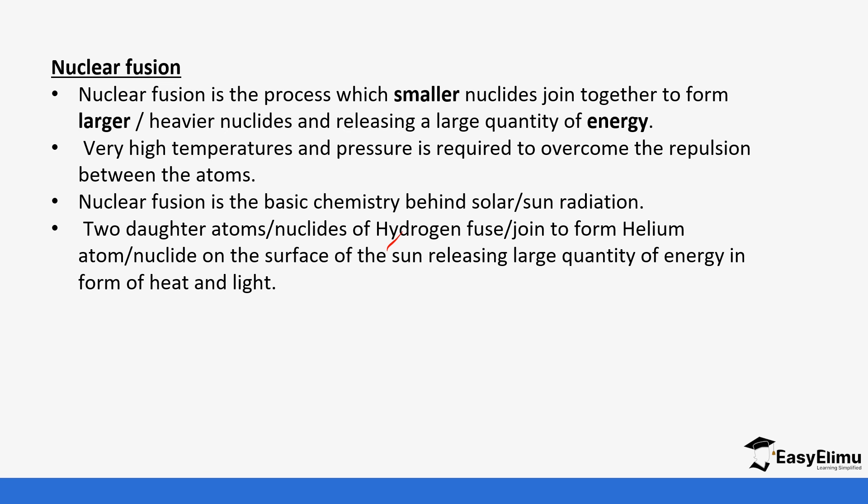So the two daughter atoms, nuclides of hydrogen, we need to remember we are working with hydrogen now, joins to form helium. So we form helium atom on the surface of the sun releasing large quantity of energy in form of heat and light. So you can see we have hydrogen, hydrogen forming helium and then you can see one neutron is given off at the end of the day.